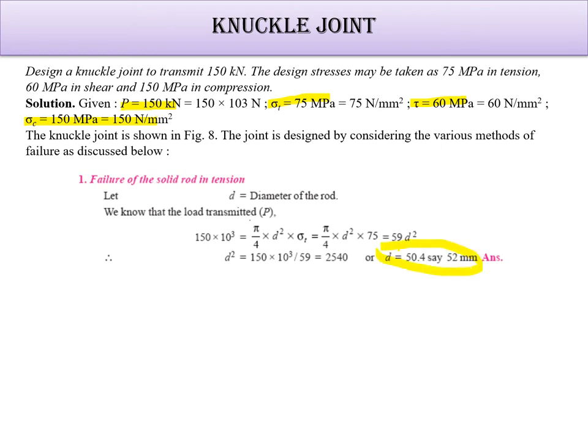In knuckle joint and in cotter joint, just remember that the rods are manufactured in the even values. That's why whatever value you are going to get, if 50.4 is there then take 52. If 41.2 is there then take 42. If 52.5 is there then go for the next value of 44. Then only you will get a safe design.